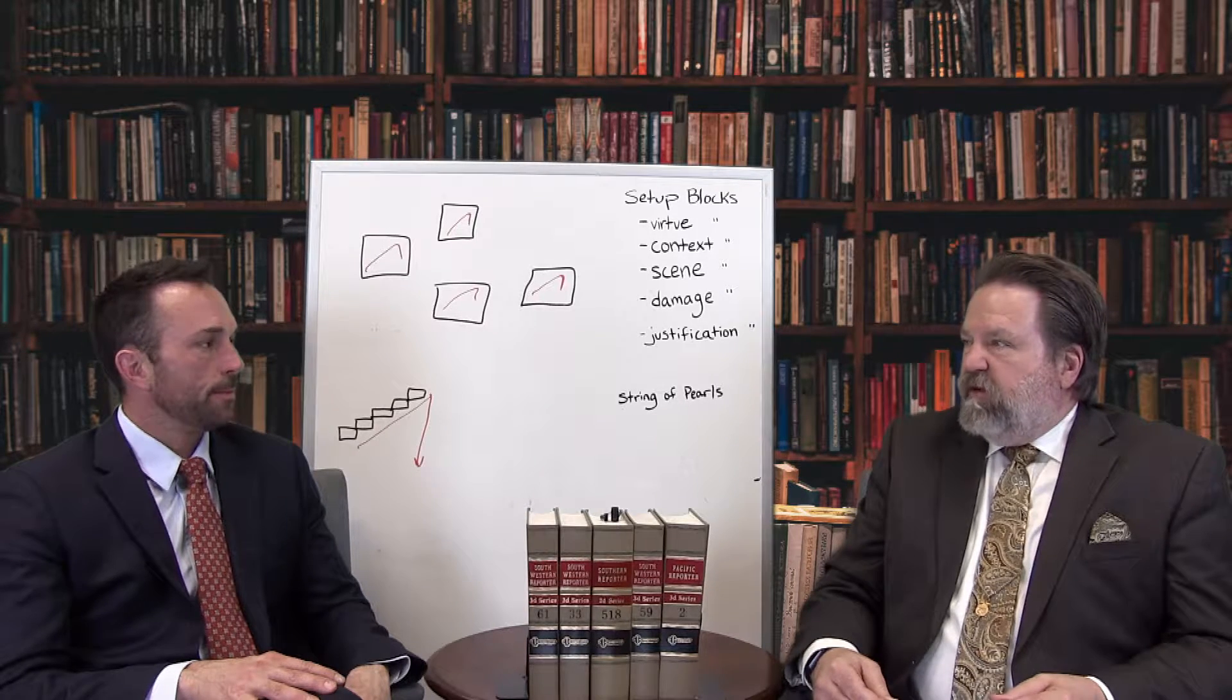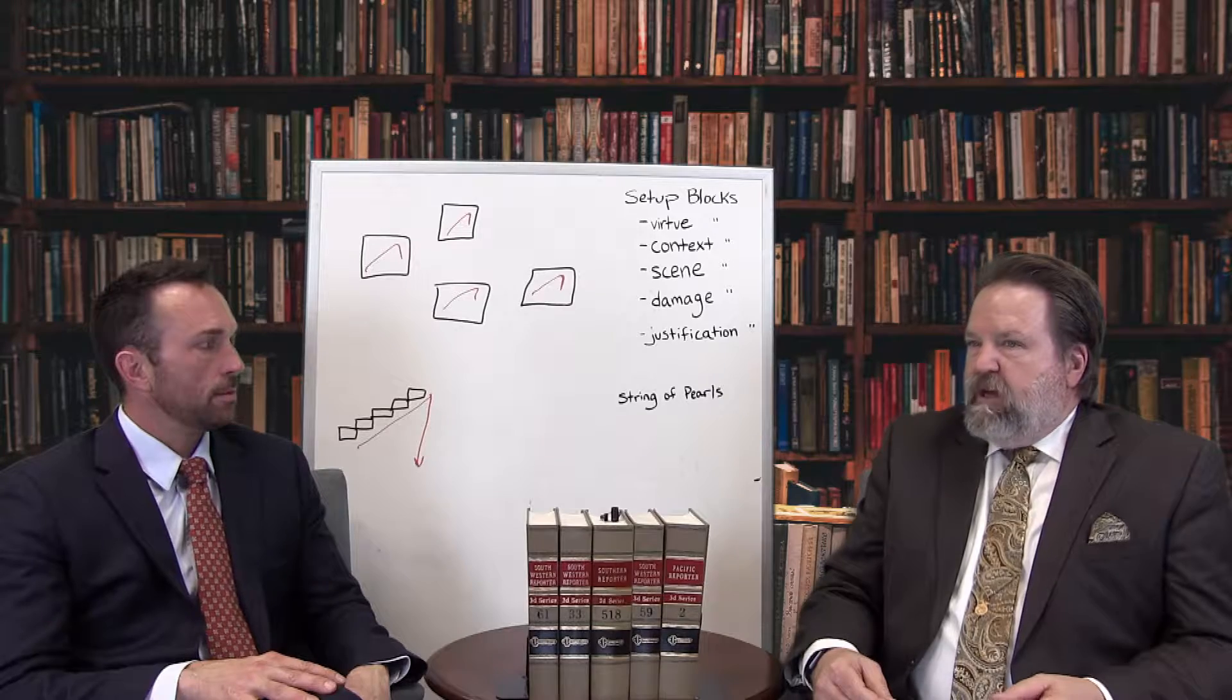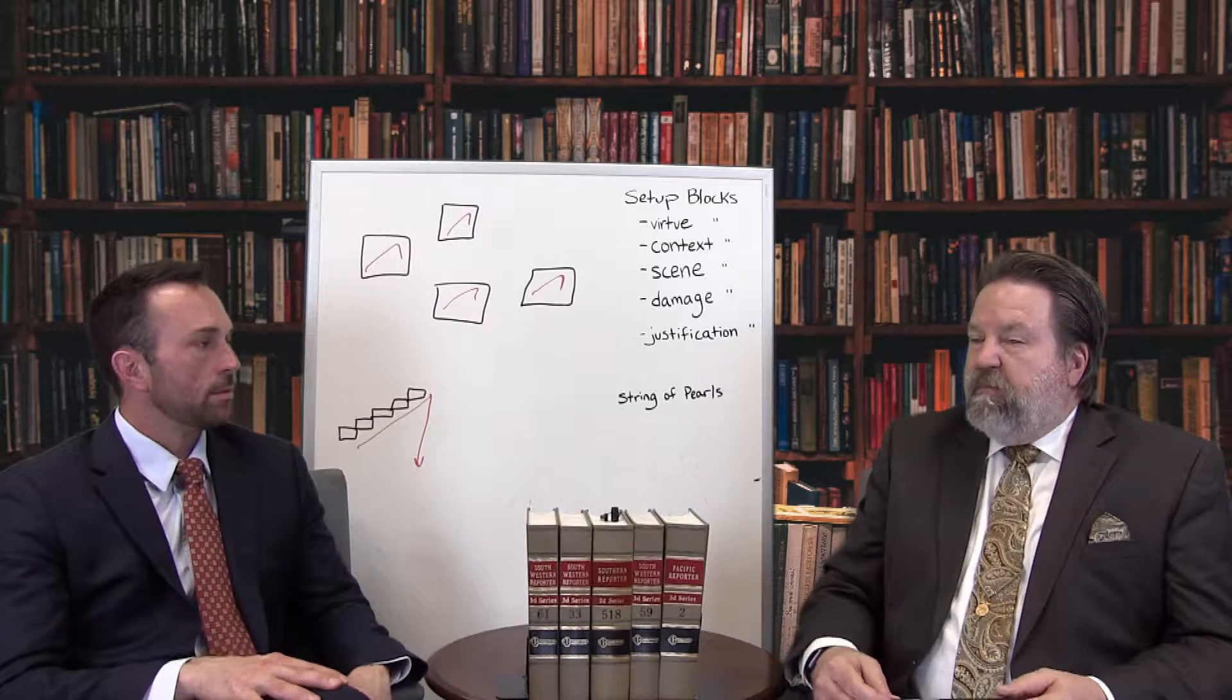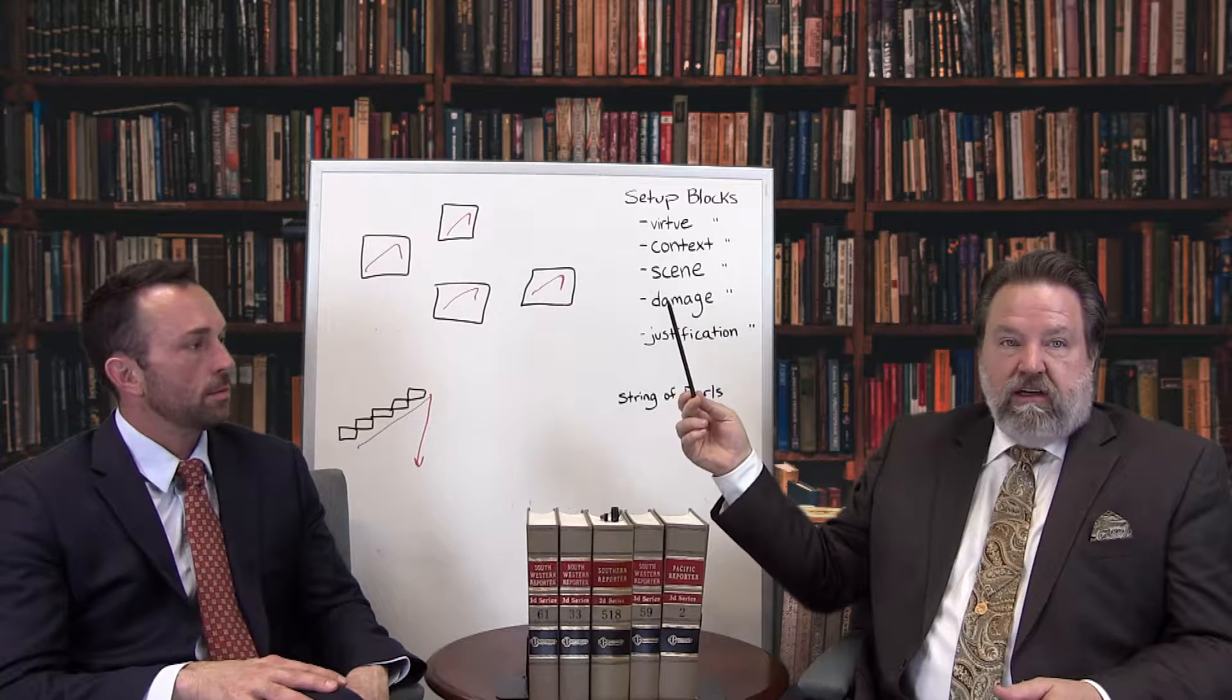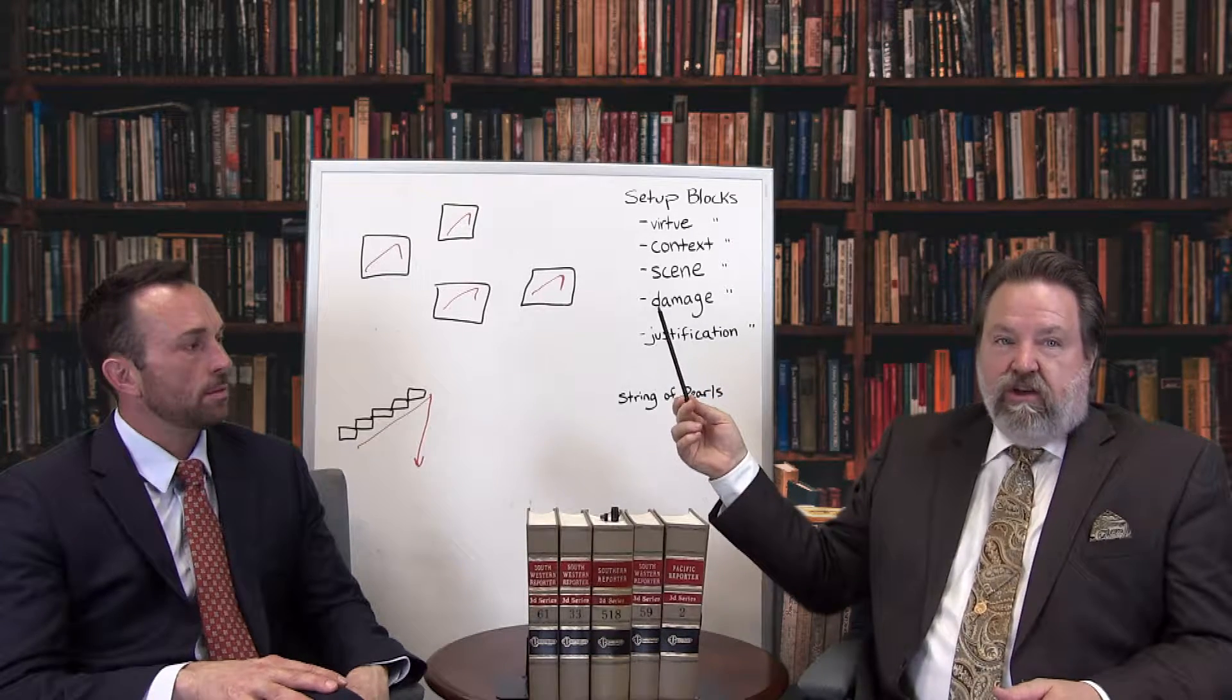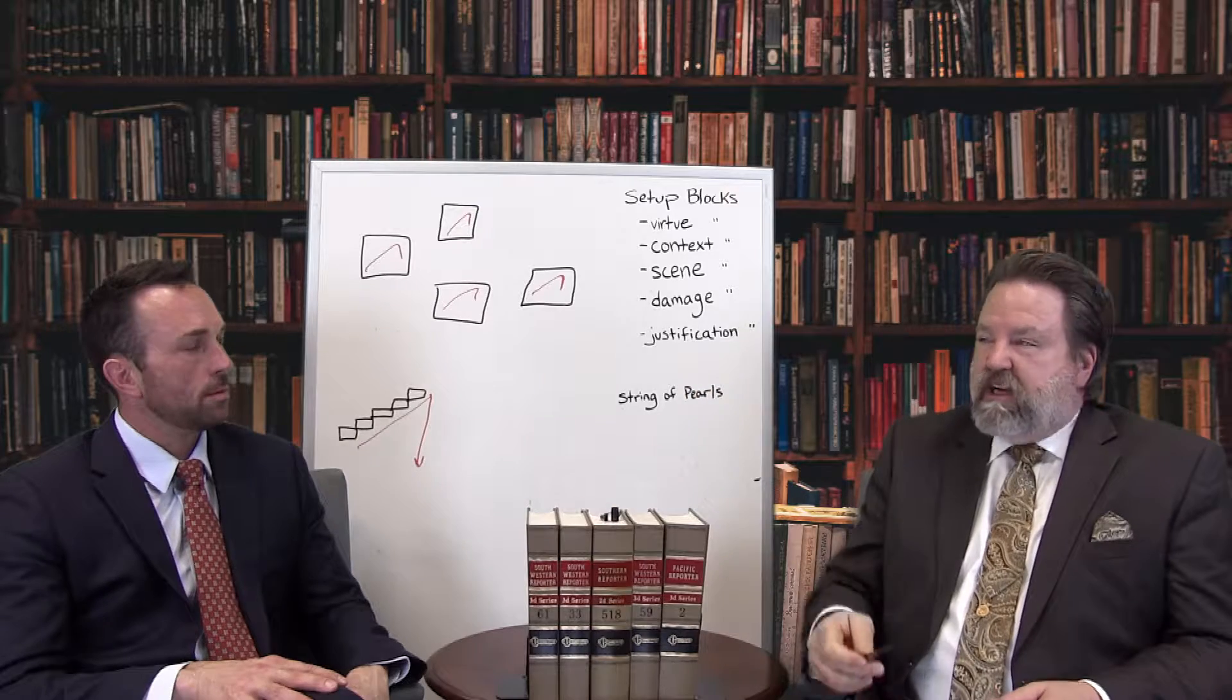And I want you to understand the elements because we're going to talk about them quite a bit. Let me give you an example of what an affirmative statement is. If you're going to start a chapter, and by the way, the block method works in opening, voir dire, closing, direct, and cross. You use this method throughout your entire trial.